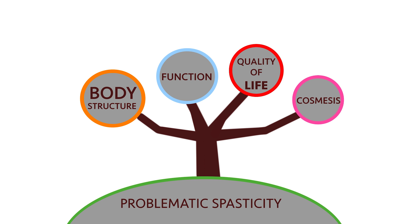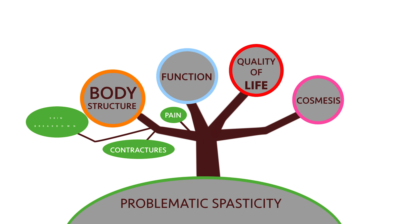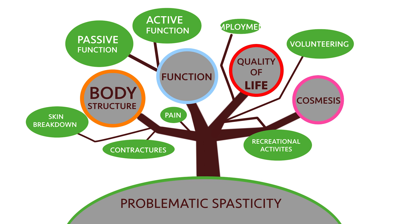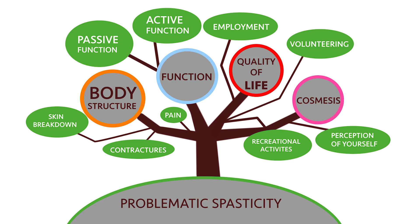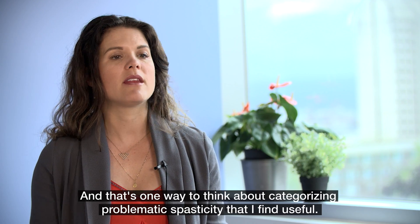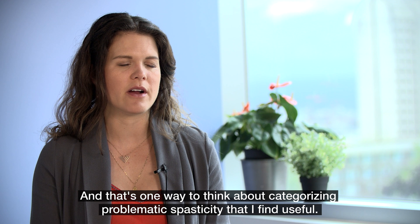Problematic spasticity may affect the body — it can cause pain, contractures, and skin breakdown because of frequent spasms causing rubbing against surfaces. It can also cause problems with function, either passive or active. Another area it can affect is general quality of life and participation. And one other thing is cosmesis — if it interferes with your perception of yourself. When asking an individual whether their spasticity is problematic, that's one useful way to categorize it.